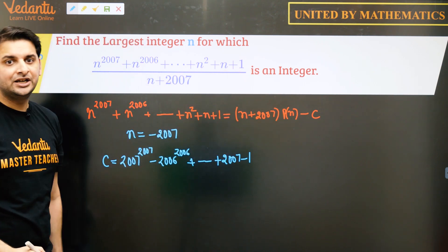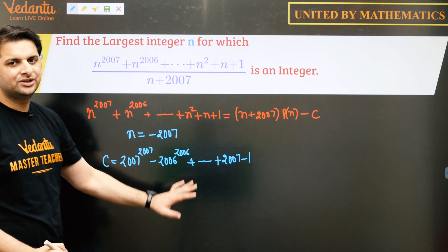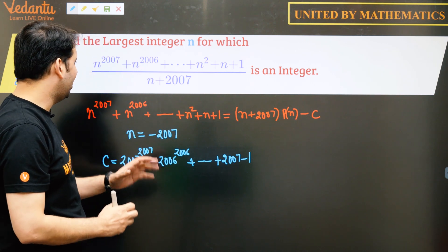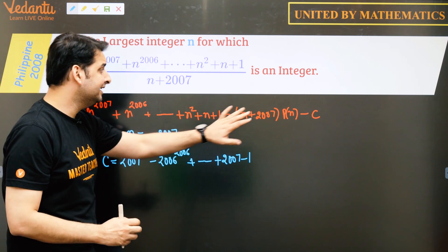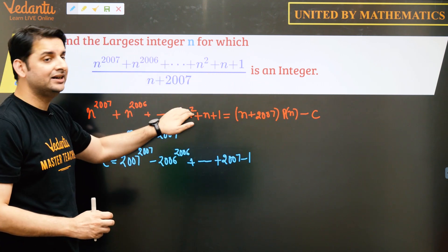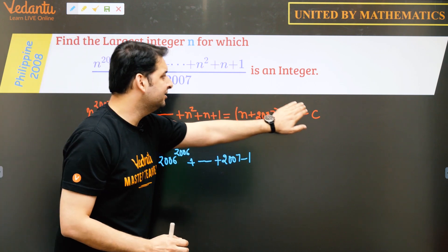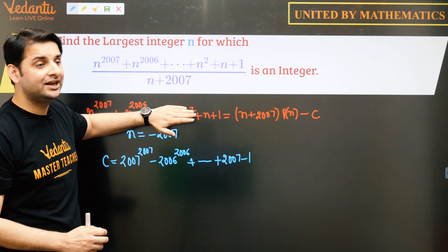So this is the value of c that we are getting but this is not the answer correctly. So how do we proceed now? So this clearly says if we put c on the left hand side, whatever is there on the left hand side,